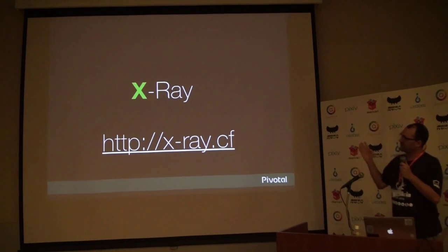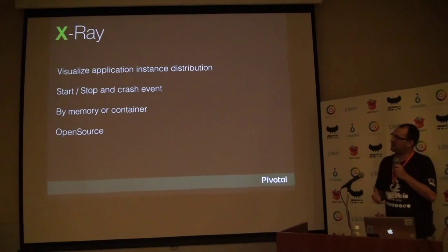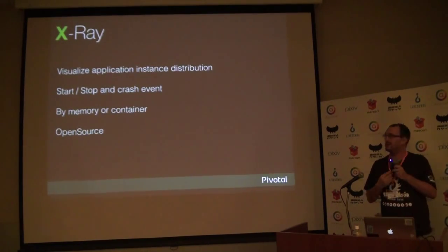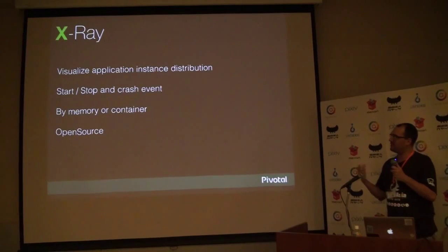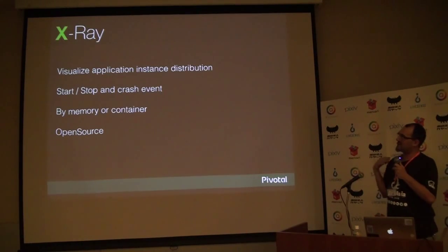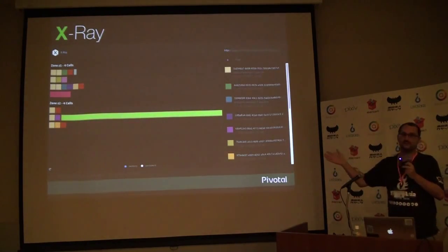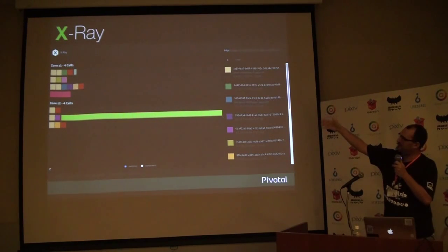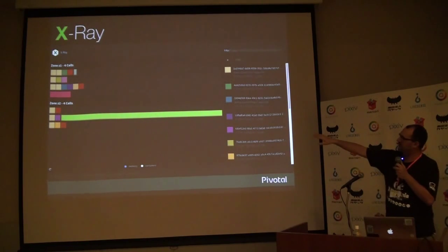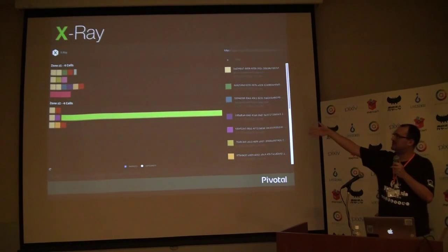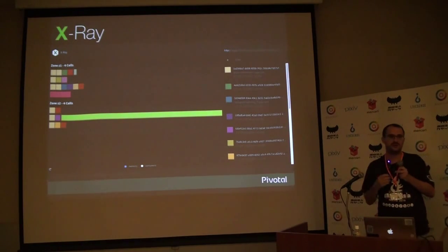Before the demo, I want to introduce X-Ray. X-Ray is a tool — kind of a dashboard — where you can visualize your application instances. You can see start, stop, and crash events, and filter by memory or containers. Of course, as with all Pivotal products, X-Ray is open source. You have cells in distributed zones — zone one, zone two — and containers using varying amounts of memory. X-Ray is pretty nice if you want to visualize what's happening in your Lattice.